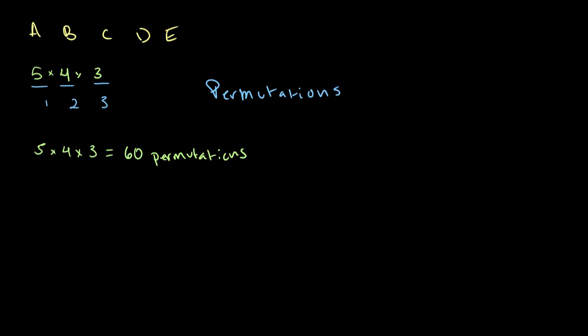Another thing we deduced in our last video was that the equation for permutations, where there are N people and R chairs, is equal to N factorial divided by N minus R factorial. I won't be going over how I got this — if this is new to you, you should watch my previous video on permutations.